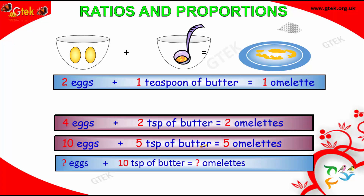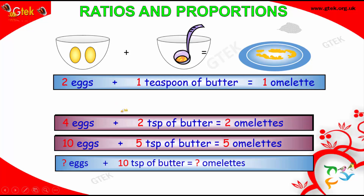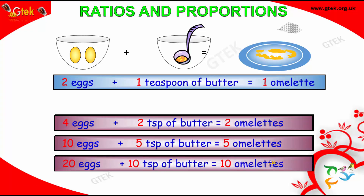Now I have 10 teaspoons of butter. With 1 teaspoon of butter you make 1 omelette and need 2 eggs. For 10 teaspoons, the multiple is 10 — so 2 eggs times 10 gives 20 eggs, and 1 omelette times 10 gives 10 omelettes. With 20 eggs and 10 teaspoons of butter, you can make 10 omelettes.